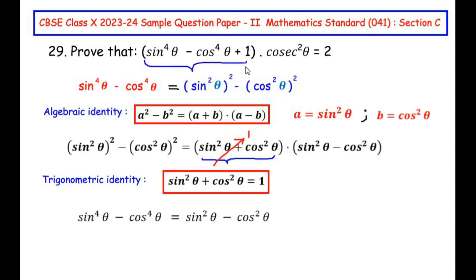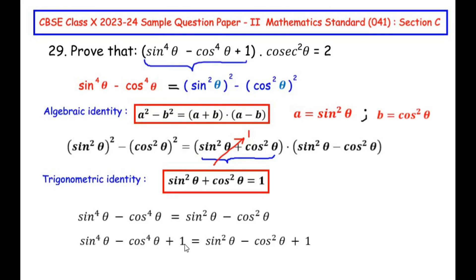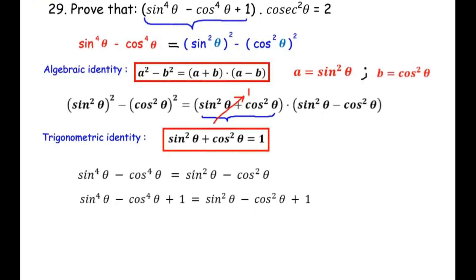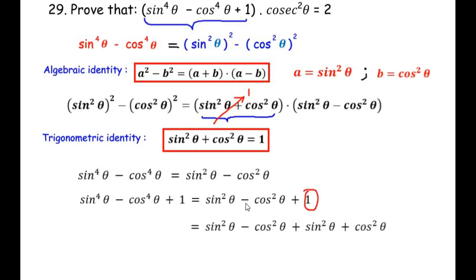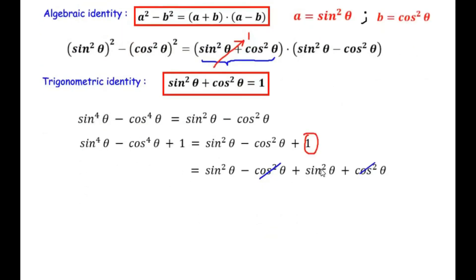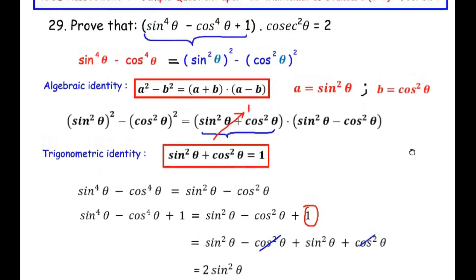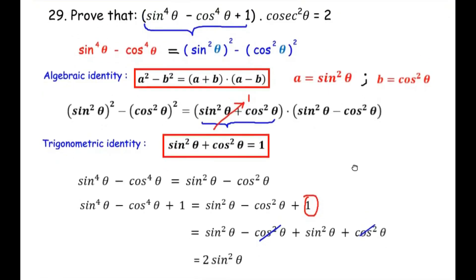So sin⁴θ - cos⁴θ + 1 becomes (sin²θ - cos²θ) + 1. Now I'm going to use the trigonometric identity sin²θ + cos²θ = 1 and replace the 1 with sin²θ + cos²θ. So we get sin²θ - cos²θ + sin²θ + cos²θ. The -cos²θ and +cos²θ cancel to 0, leaving sin²θ + sin²θ = 2sin²θ. So the entire expression sin⁴θ - cos⁴θ + 1 simplifies to 2sin²θ.